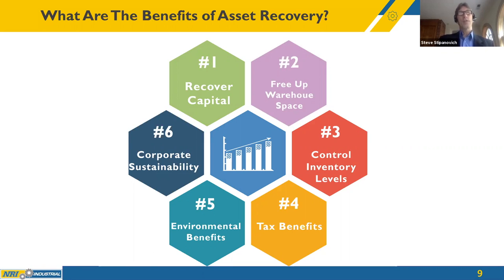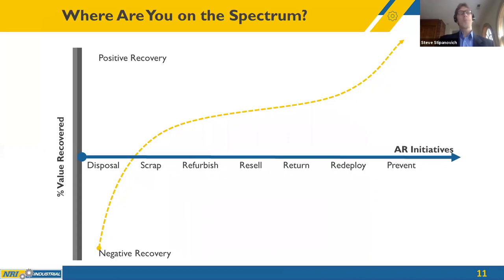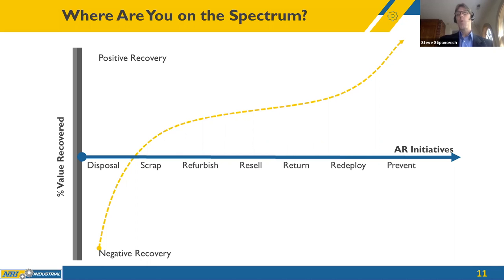How are organizations currently recovering value from surplus inventory? Asset recovery can be looked at as a spectrum. On the y-axis is percent of value recovered — anything below the line is negative value, where you don't want to be. On the x-axis are asset recovery initiatives you can implement. Everything from throwing surplus in the garbage to proactively reducing surplus: as you improve the quality of your asset recovery processes, your recovery rates will increase. If your company is currently scrapping surplus, there are significant improvements you can make.